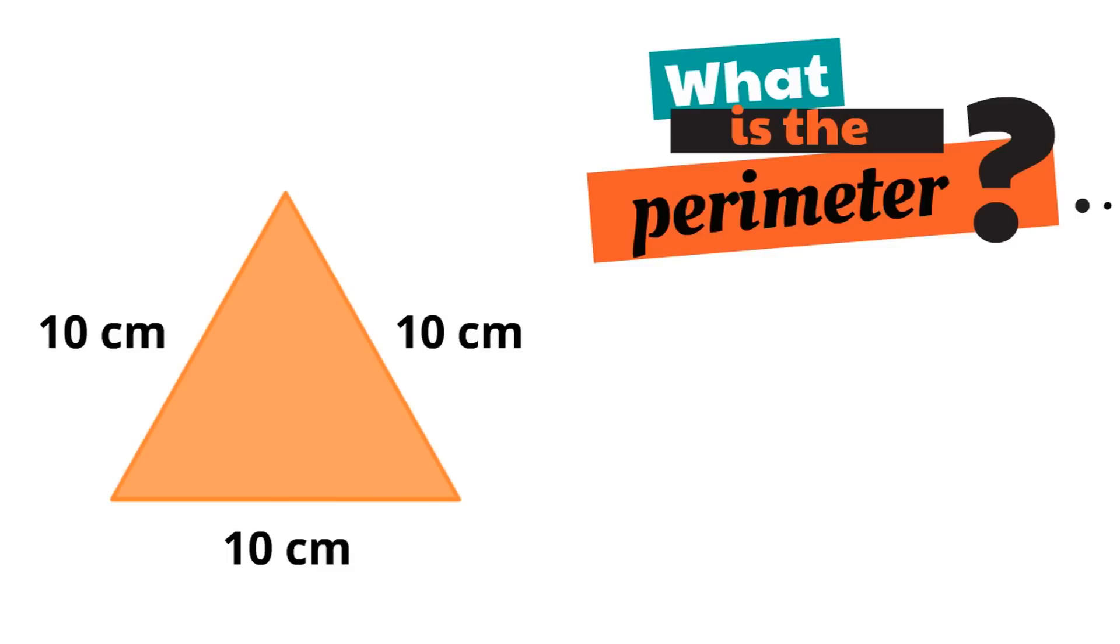Now remember, to find the perimeter of a shape, we need to know the distance around the whole shape. So we just add the sides together. What's 10 plus 10 plus 10? That's three tens. What does that equal?